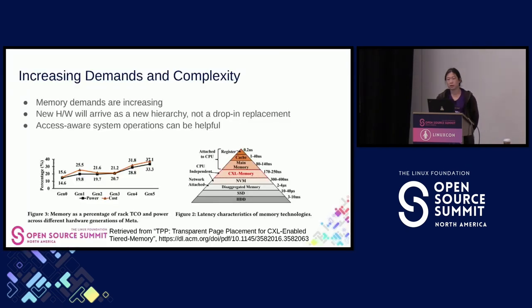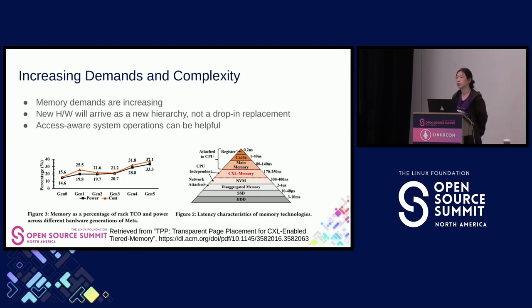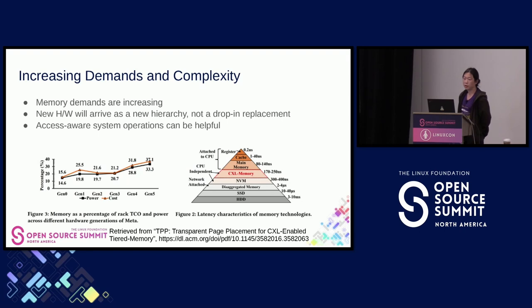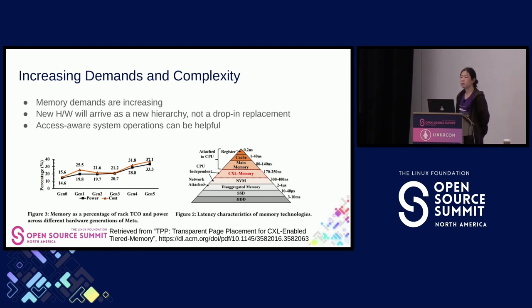On importance and difficulties: basically, one of the interesting trends we see nowadays is that memory demands are increasing. We've heard about NVIDIA and price increases on semiconductors. Fortunately, there are next-generation hardware devices providing larger capacity and faster speed, but those will arrive as a new hierarchy rather than a drop-in replacement, meaning the total system complexity will increase. On such systems with high memory demand and complex architecture, more efficient and simplified system operations are very important, and access-aware operations could be an answer for that.